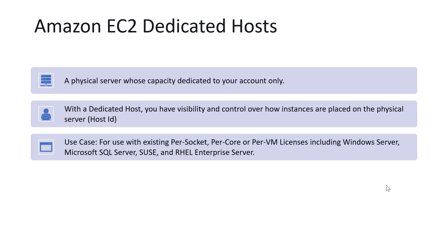The use cases for dedicated host include where you need to bring your own existing per-socket, per-core, or per-VM licenses, which includes Windows Servers, Microsoft SQL Servers, SUSE, and RHEL enterprise servers. There are certain restrictions on bring-your-own-licensing: if you want to run RHEL, SUSE Linux, or SQL Server on a dedicated host, you need to bring your own AMIs. The RHEL, SUSE Linux, and SQL Server AMIs available on AWS Marketplace cannot be used with a dedicated host. Only specific instance families such as the U-series or high memory instances can use RHEL and SUSE Linux AMIs offered by AWS Marketplace.